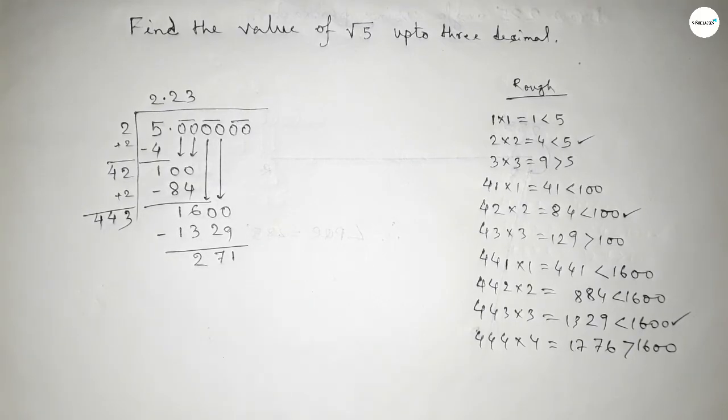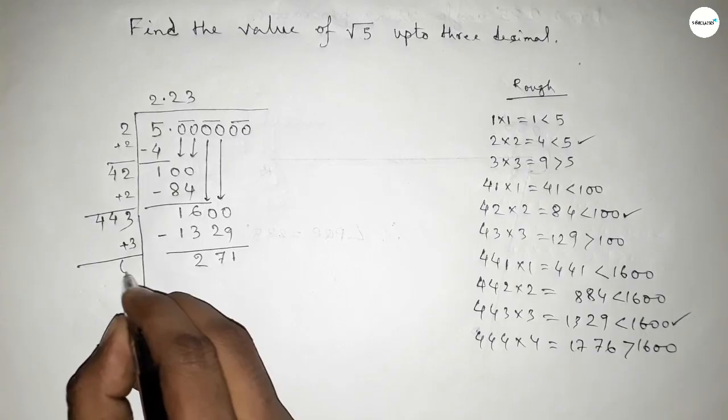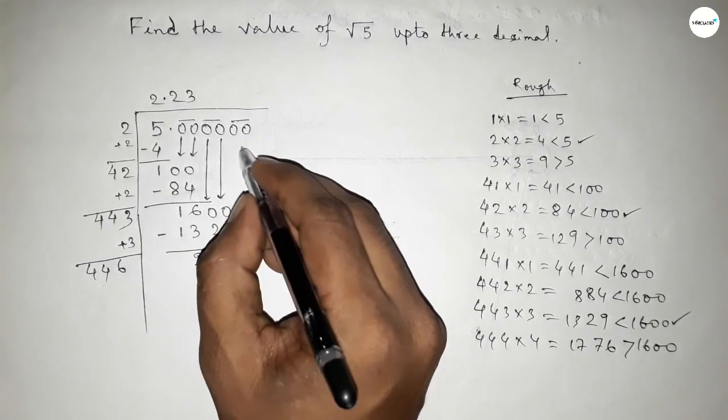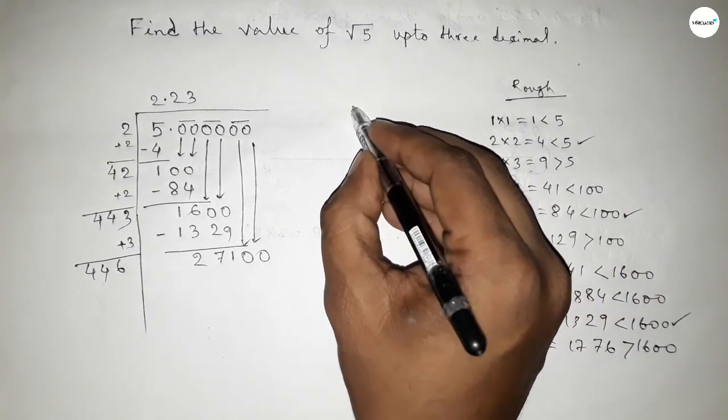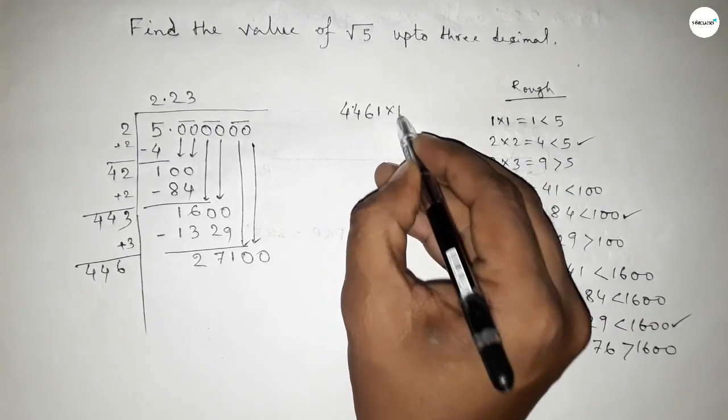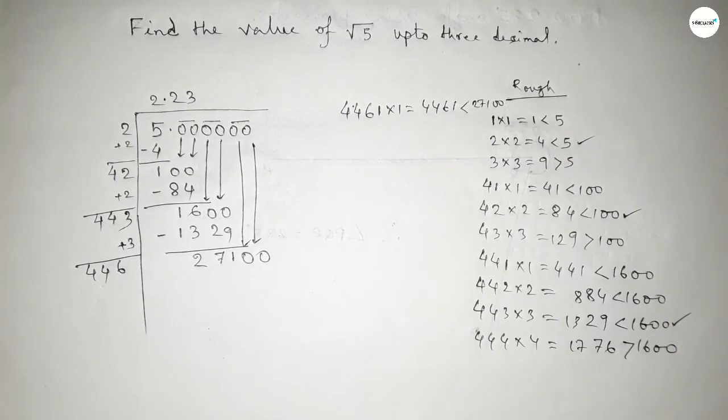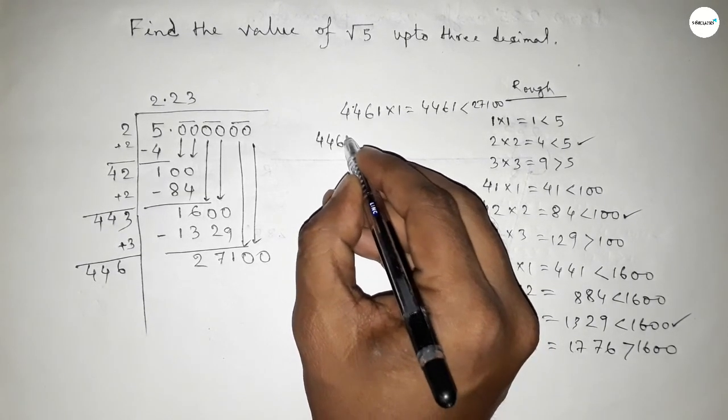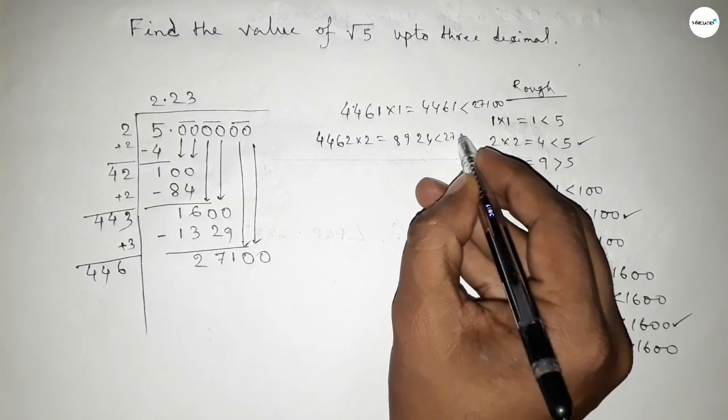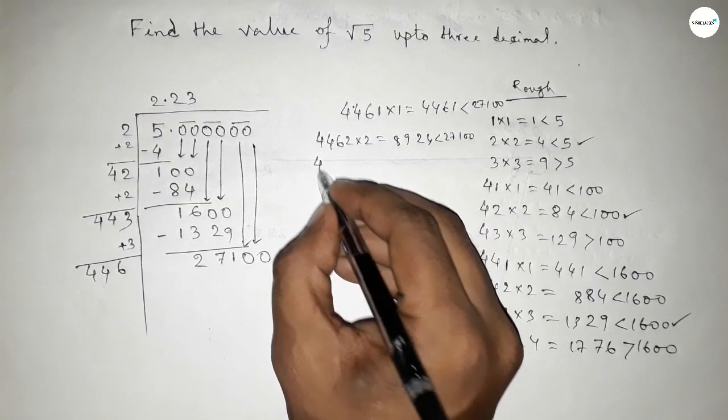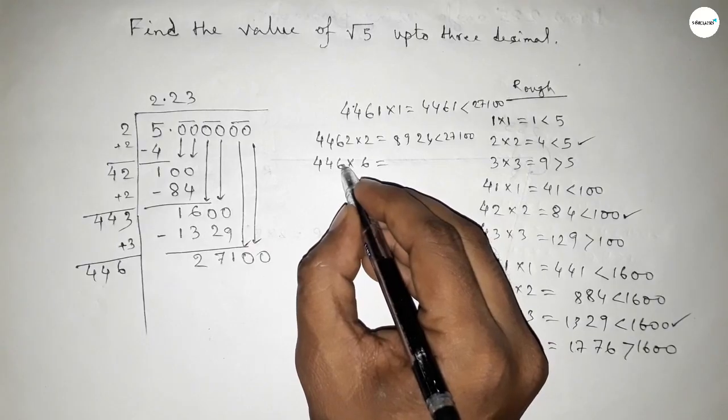Now subtracting this, so this is 271. Similarly adding here the last digit, the last digit is 3, so adding 3, this is 446. And putting the pair of 0 here. Now what should we put here similarly beside 446? If we put 1 which is less than 27100. Again if we put beside 446, 2 and multiplying 2 which is less than 27100.